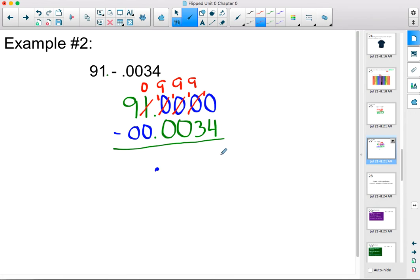So ten minus four is six. Nine minus three is again six. Nine minus zero is nine. Nine minus zero is nine. Zero minus zero is zero. And nine minus zero is nine. So our final answer here is 90 and 9,966 ten thousandths.